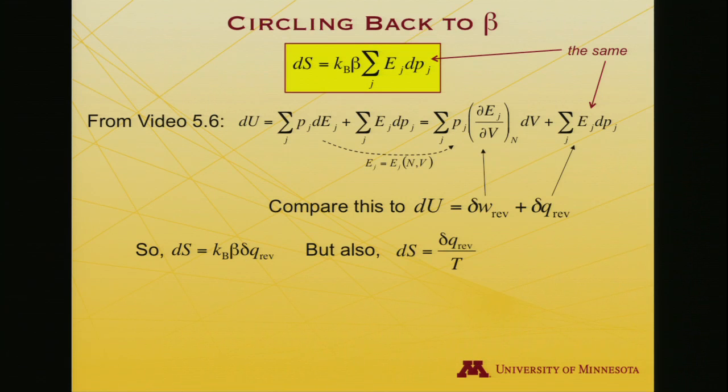Mind you, the definition of ds is it's del q reversible divided by t. And as a result, kb times Boltzmann's constant must be this 1 over t, ergo beta has to be 1 over kt. Quod erat demonstrandum.